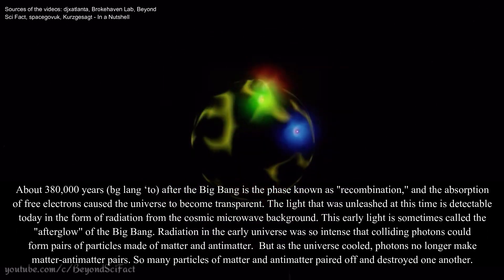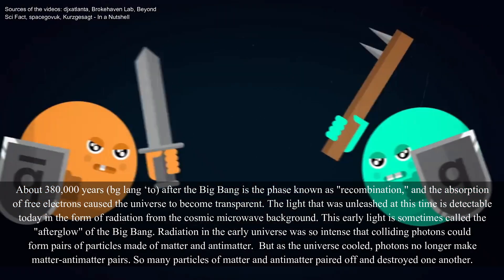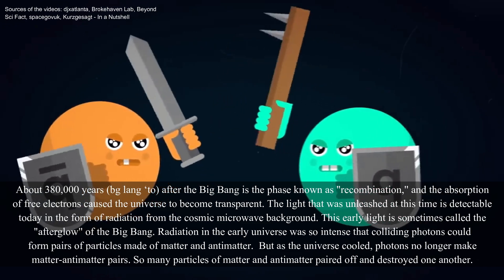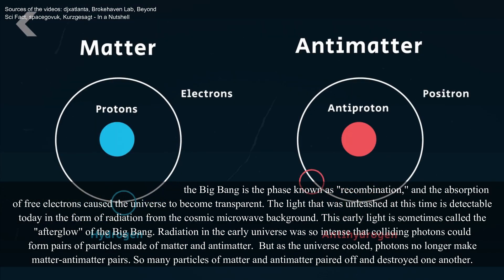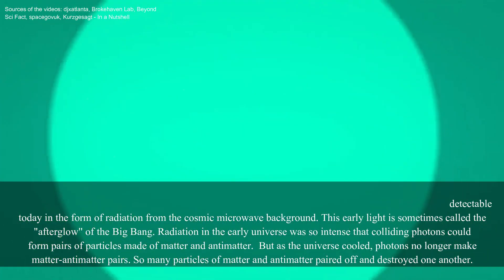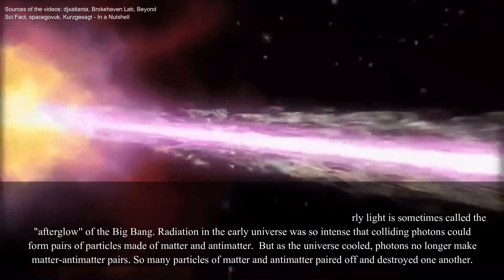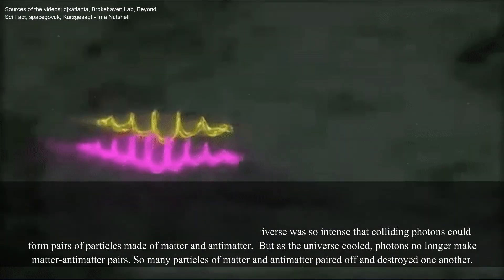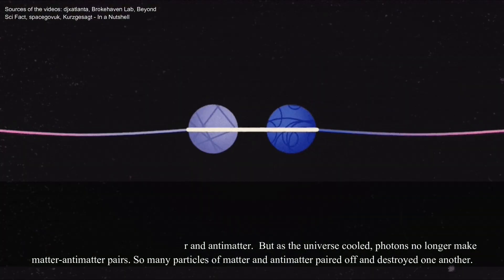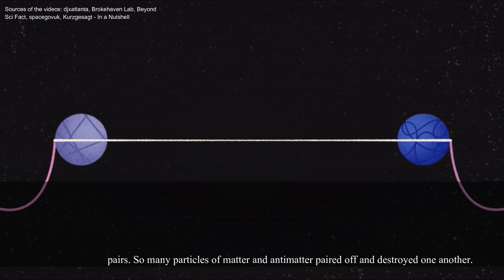Radiation in the early universe was so intense that colliding photons could form pairs of particles made of matter and antimatter. But as the universe cooled, photons no longer make matter-antimatter pairs. So many particles of matter and antimatter paired off and destroyed one another.